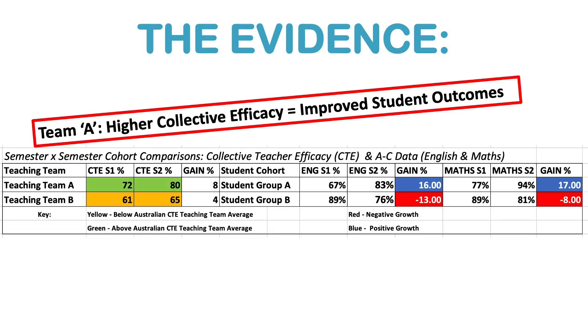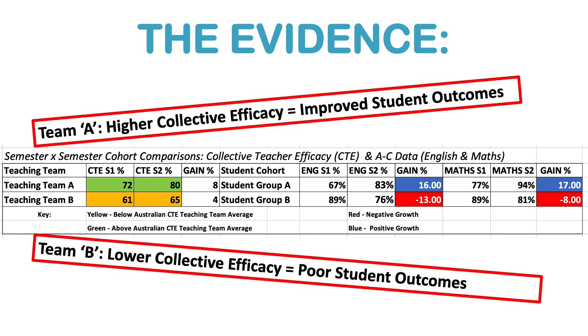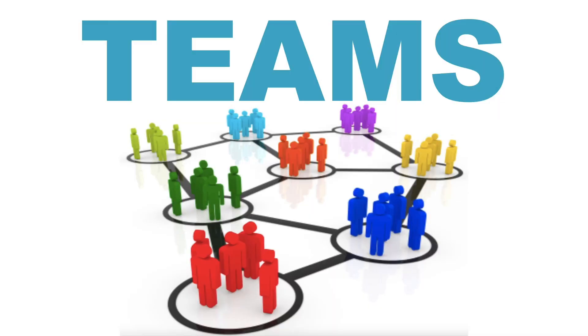The evidence behind collective efficacy and student outcomes is pretty compelling. You can see on the screen some data where Team A has higher collective efficacy and higher student outcomes, and Team B has lower collective efficacy and lower student outcomes. Given these findings, the focus needs to be on teaching teams and the collective efficacy they generate.